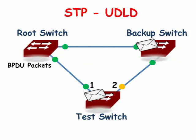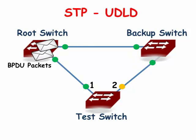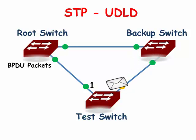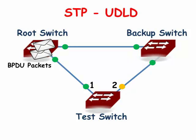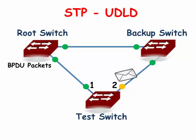Some unidirectional link issues are created by problems in the connection media. Usually, unidirectional link cable issues only occur with fiber optics.